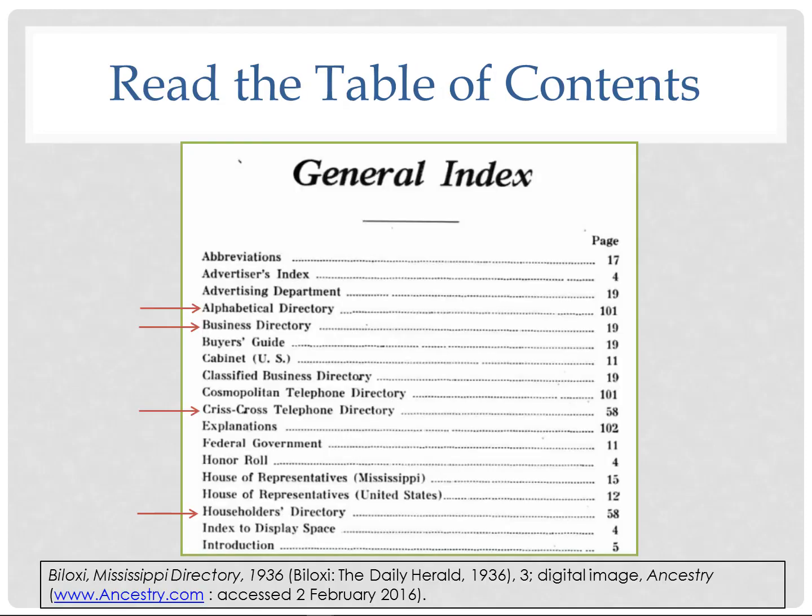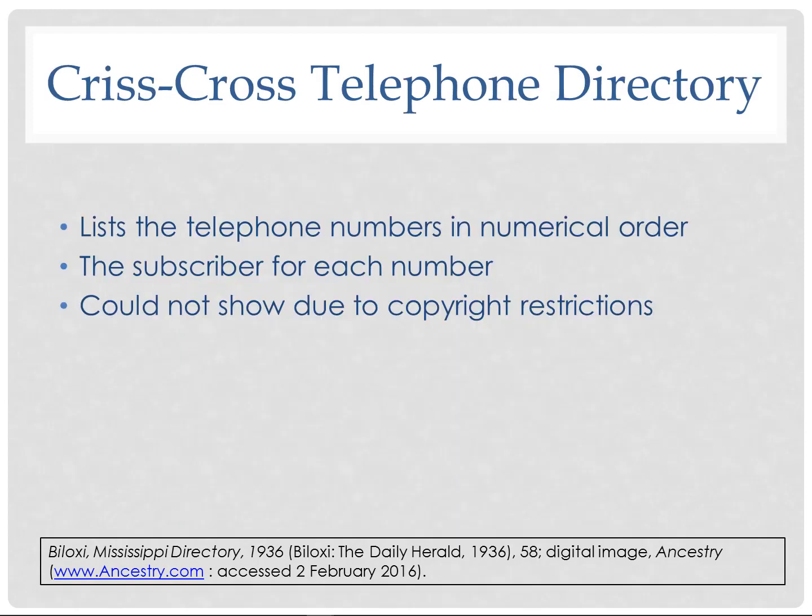Read the table of contents. Here's a table of contents from a Biloxi, Mississippi directory in 1936 with an alphabetical directory, a business directory, a crisscross telephone directory, and a householder's directory. The crisscross telephone directory is interesting — it lists telephone numbers in numerical order, then the subscriber for each number. This sort of information is difficult to obtain today, so make sure to look for it.